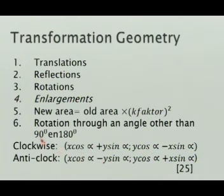If you rotate through an angle of 20 degrees clockwise, you use this formula. X cos, that can also be theta, any letter there. X cos theta plus y sin theta. That is how you get the x coordinate. And the y coordinate is y cos alpha minus x sin alpha.